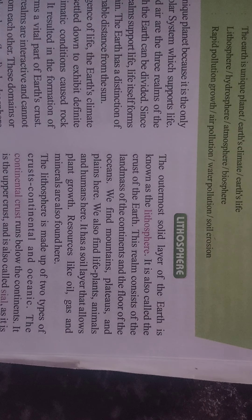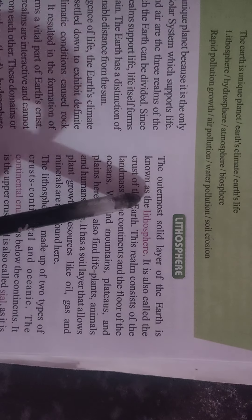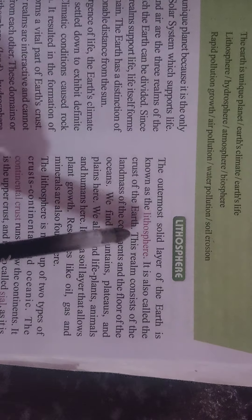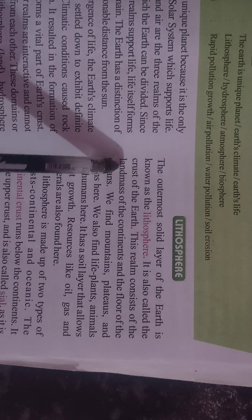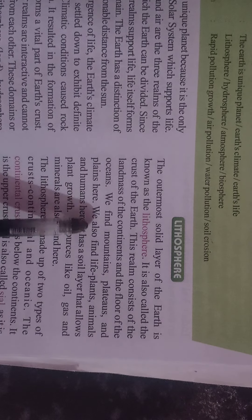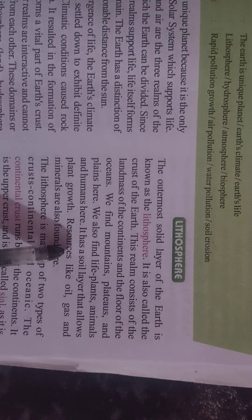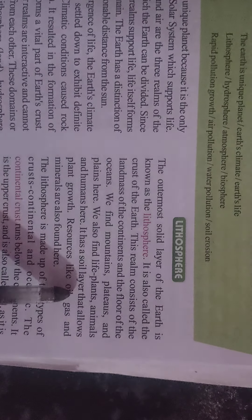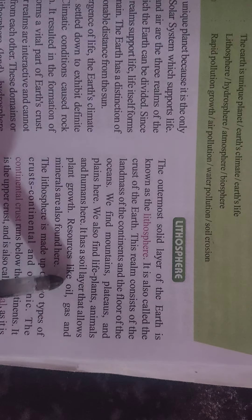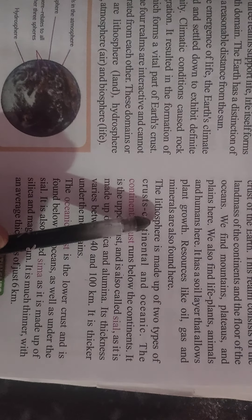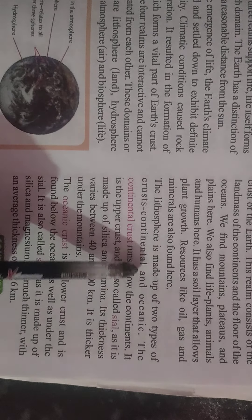Now, what is the lithosphere? The outermost solid layer of the Earth is known as the lithosphere. It is also called the crust of the Earth. This realm consists of the landmass of the continents and the floor of the oceans. We find mountains, plateaus and plains here. We also find life — plants, animals and humans here. It has a soil layer that allows plant growth. Resources like oil, gas and minerals are also found here.